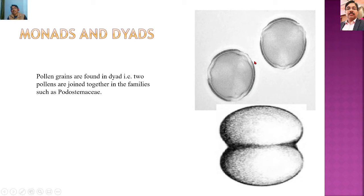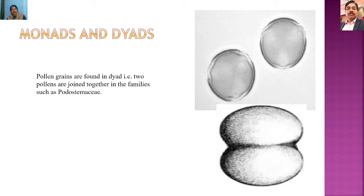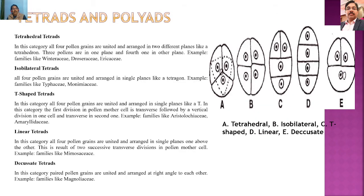Sometimes after cell division, two cells remain joined with each other. Such pollen grains are called diads, and this is a characteristic of the family Podostemaceae, in which pollen grains are found as diads.